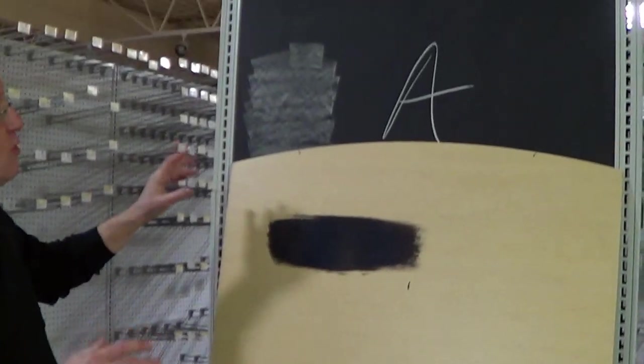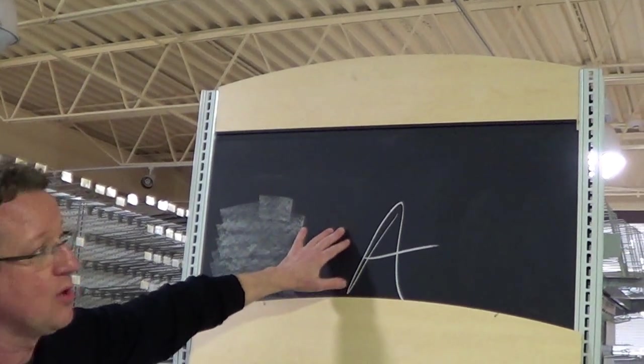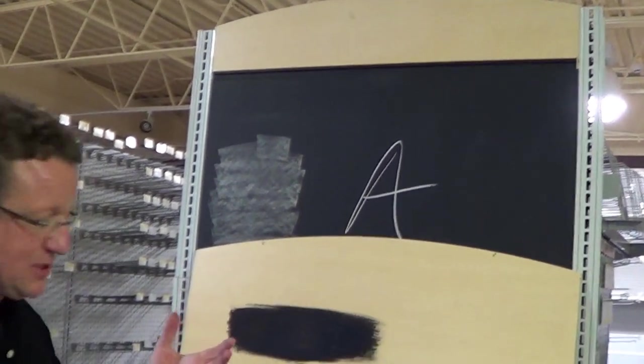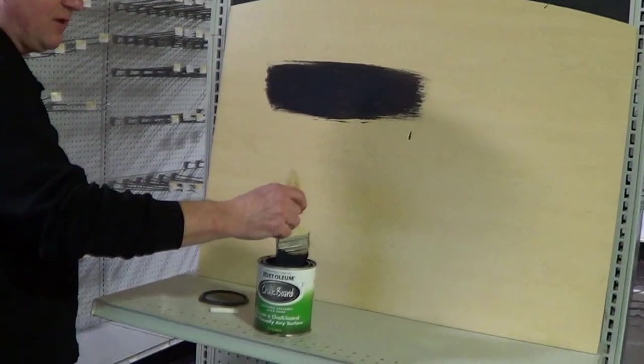Here we're setting up a retail store and we're putting this chalkboard paint on the end cap so that we can put up sales signs. And it's very simple to use.